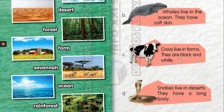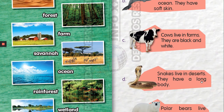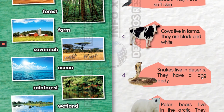Cows live in farms, they are black and white. Las vacas viven en las granjas, ellas son blanco y negro. Snakes live in deserts, they have a long body. Las serpientes viven en el desierto, ellos tienen un cuerpo largo.